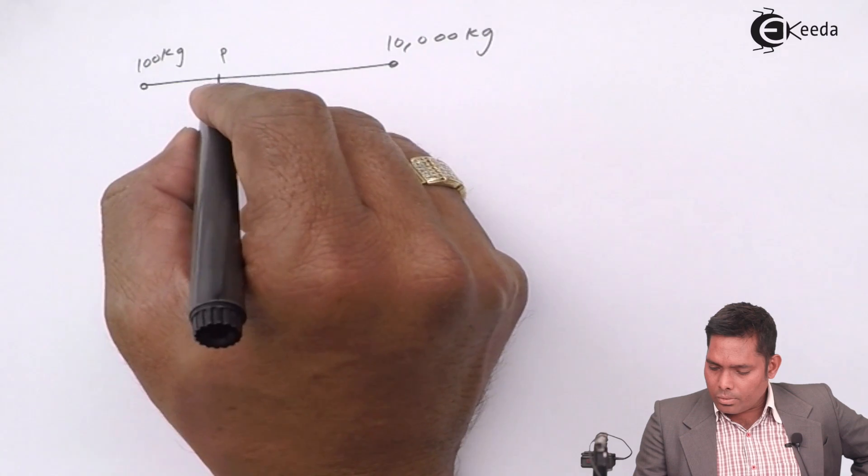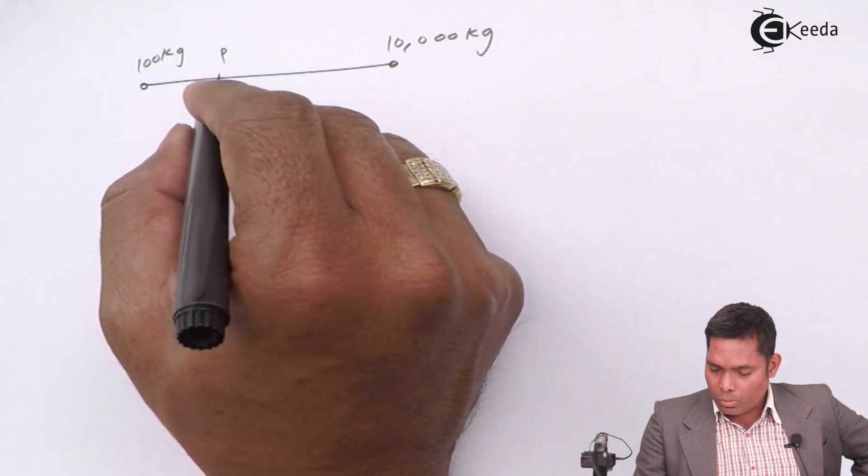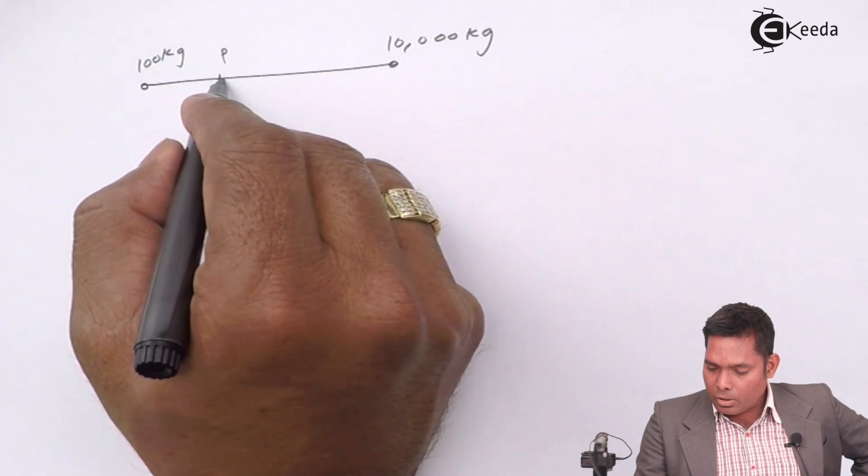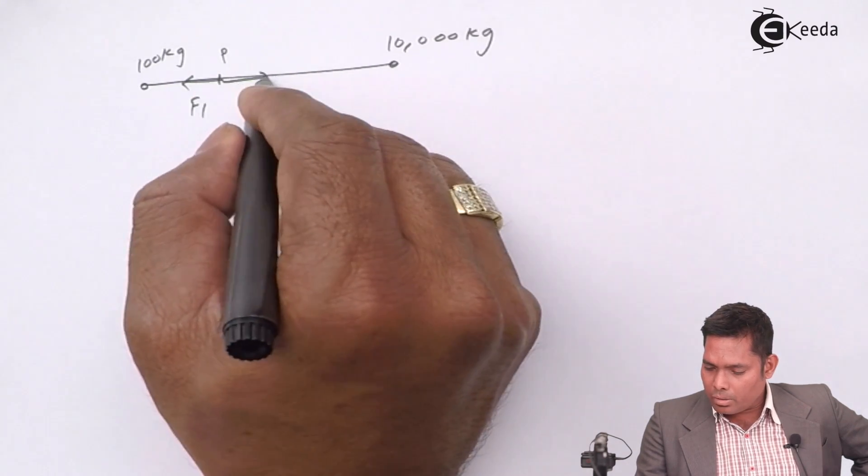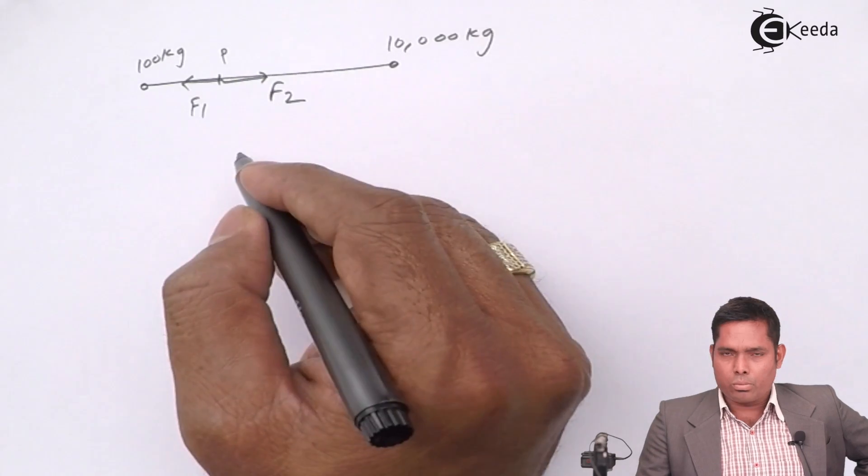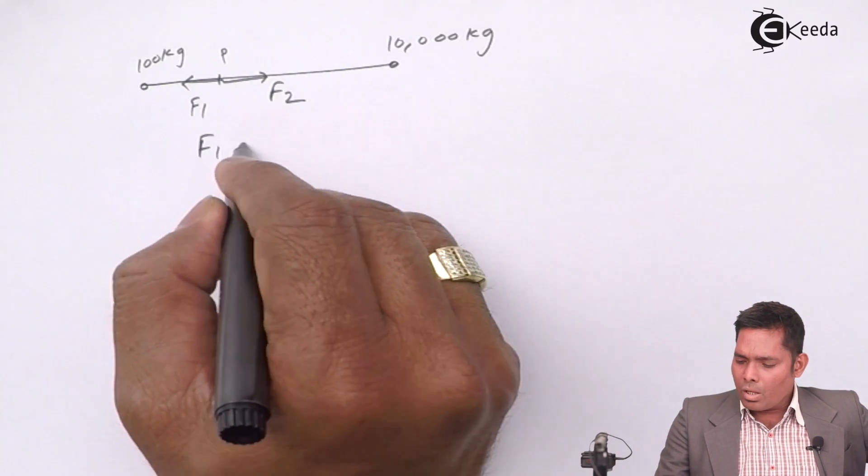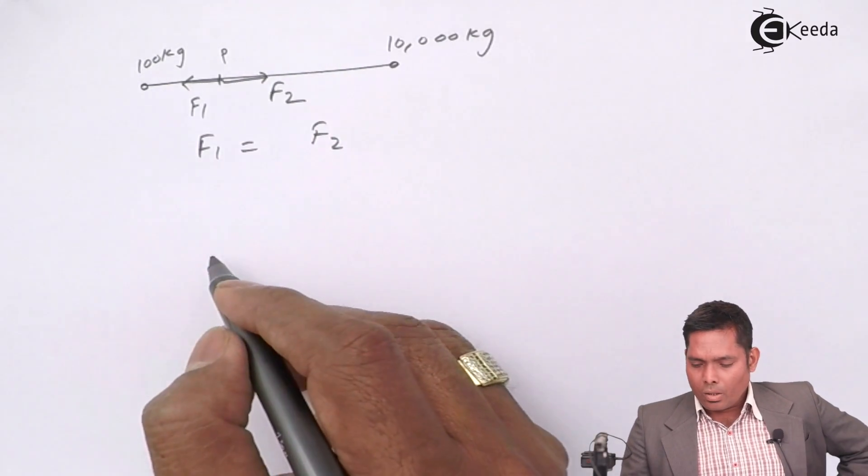So this will exert a force of attraction here, that is F1, and this will also exert a force of attraction here, F2. The net has to be zero. That means F1 must balance F2.